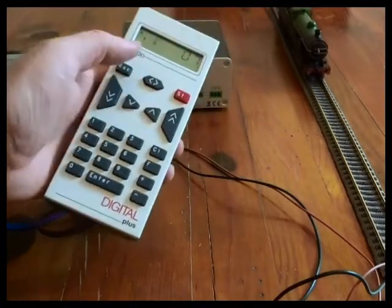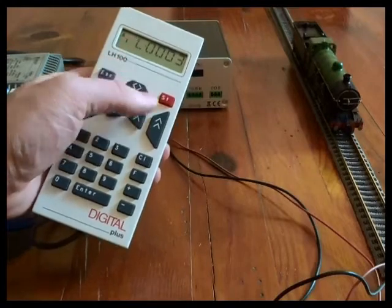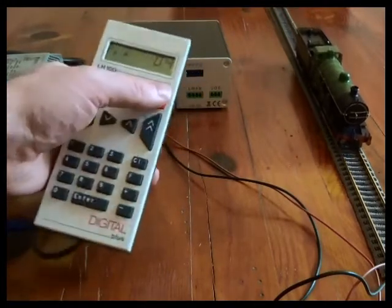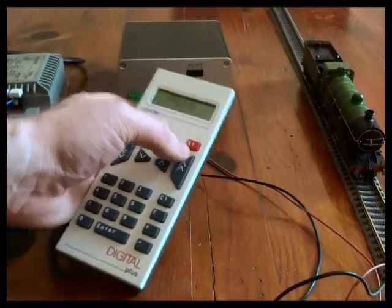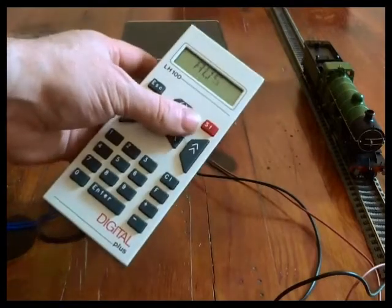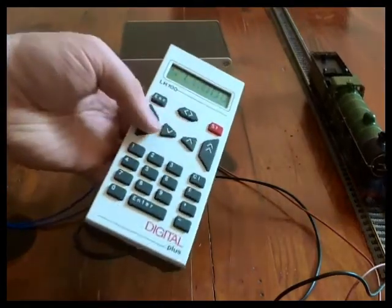If you feel it's getting away from you, you can stop the loco by pressing the double arrow. If things are going to part on the layout, you can pull an emergency stop with the red button and that will stop absolutely everything. Once you've cleared the problem, if you press stop again, it will resume where it was.